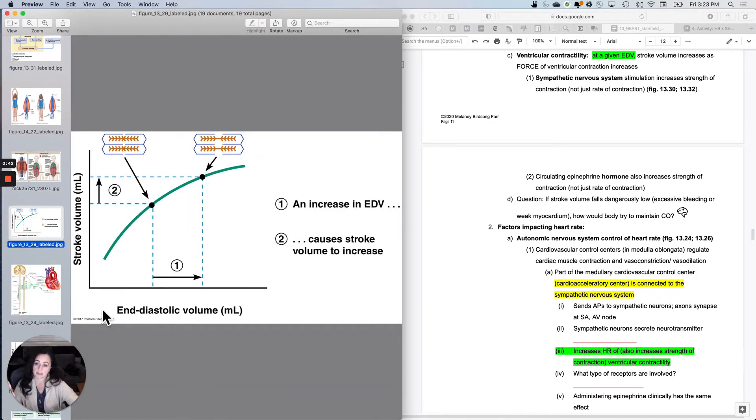With Starling's Law, what happens is if you increase the EDV, the volume in the ventricles, then you get the sarcomeres to contract better. So this is changing the volume, getting a stronger contraction.